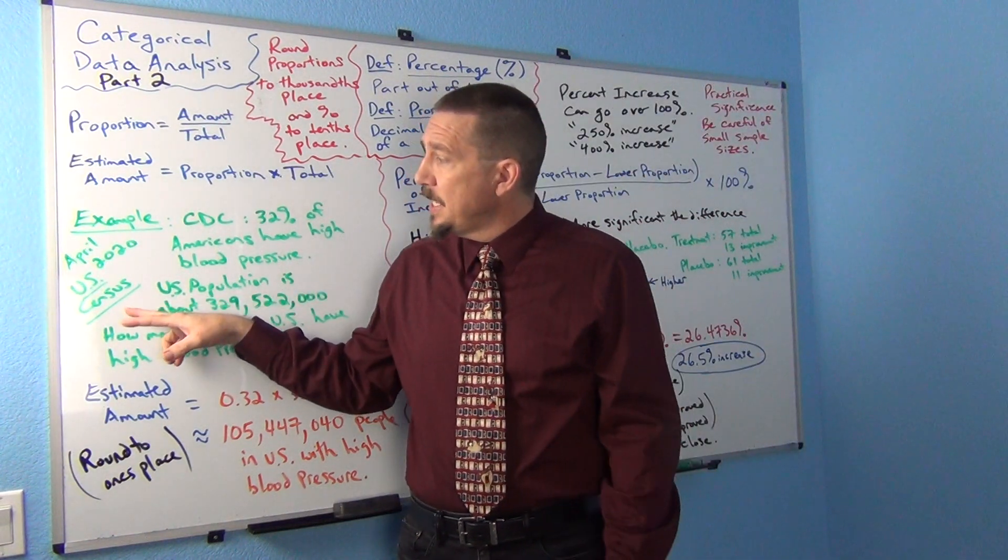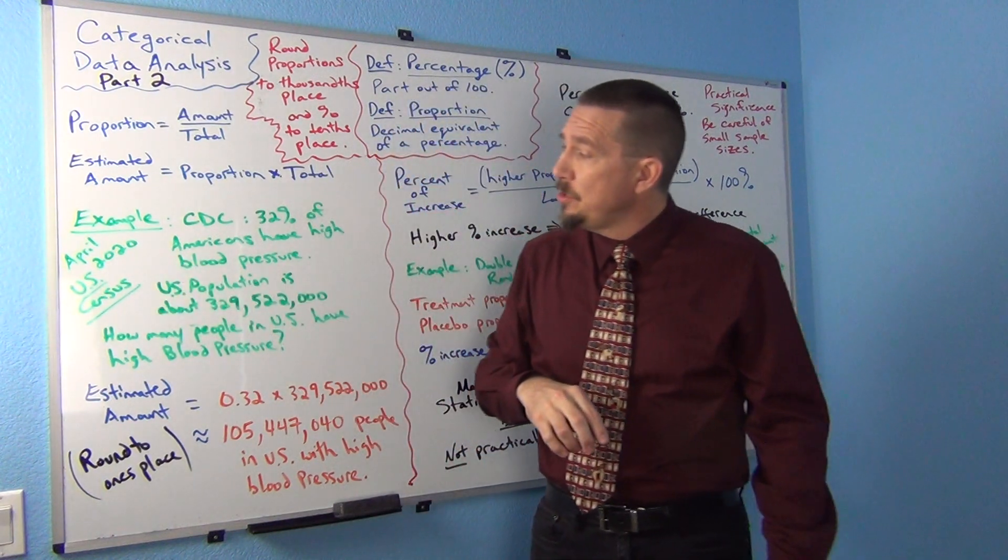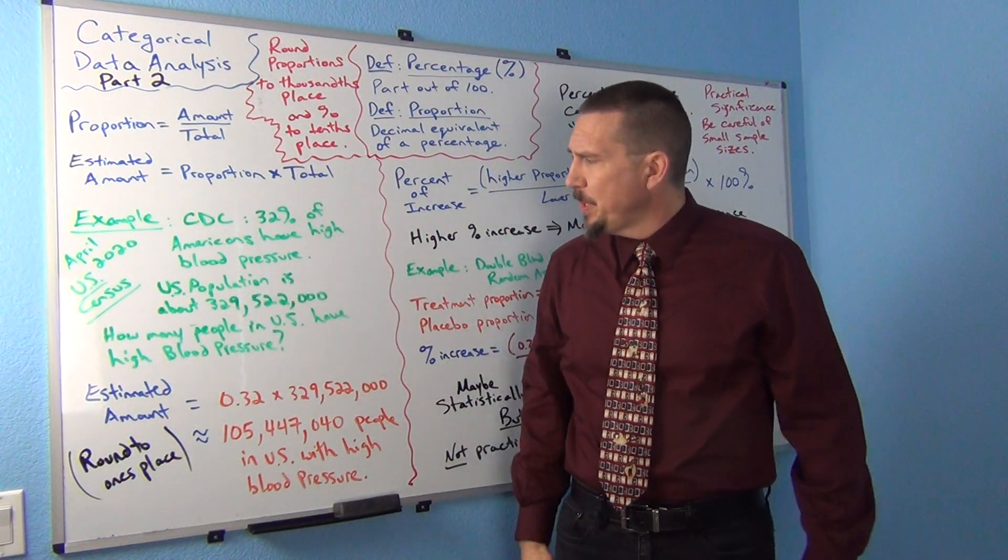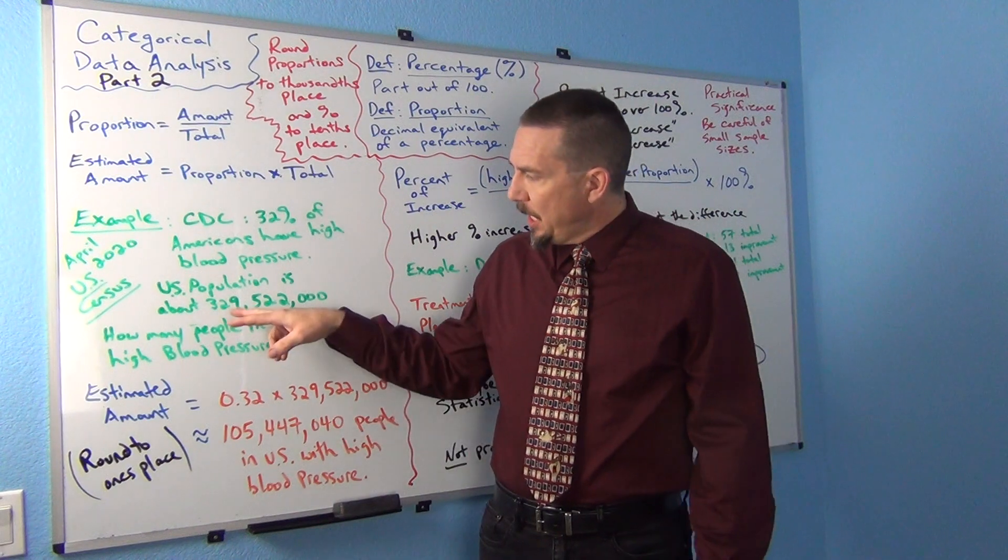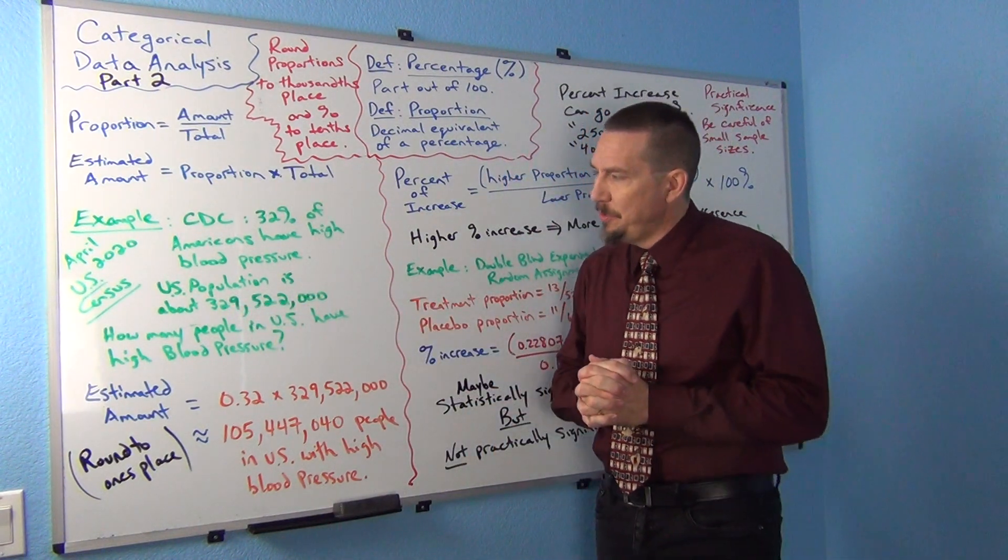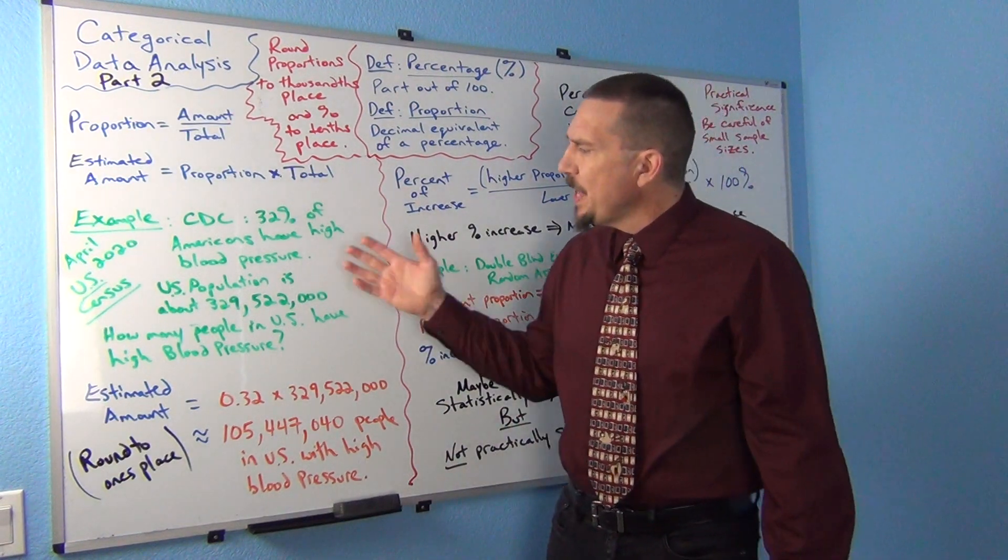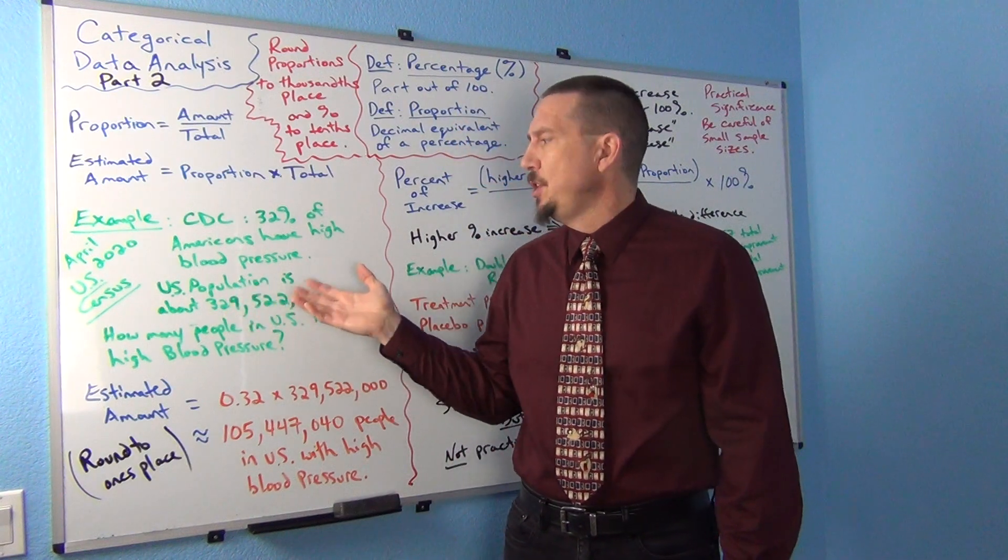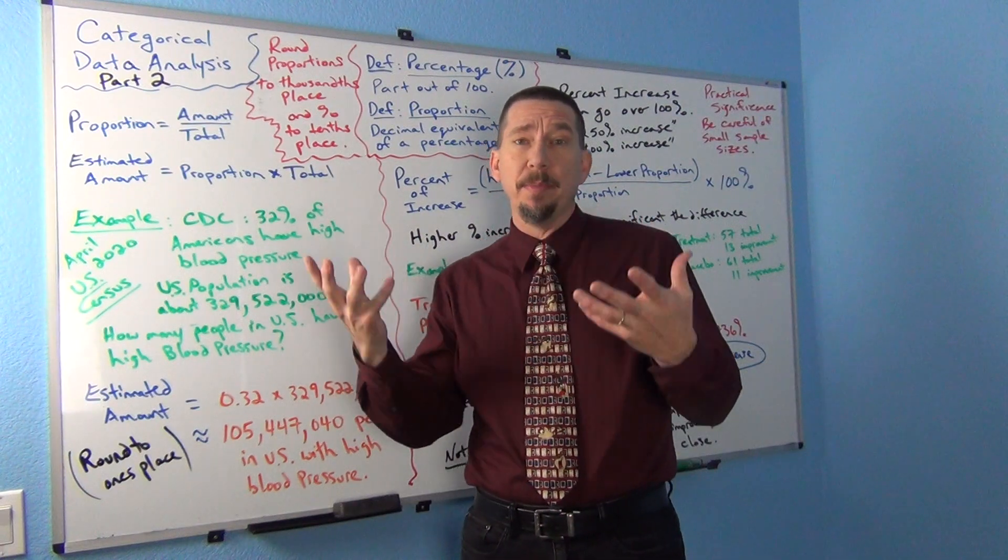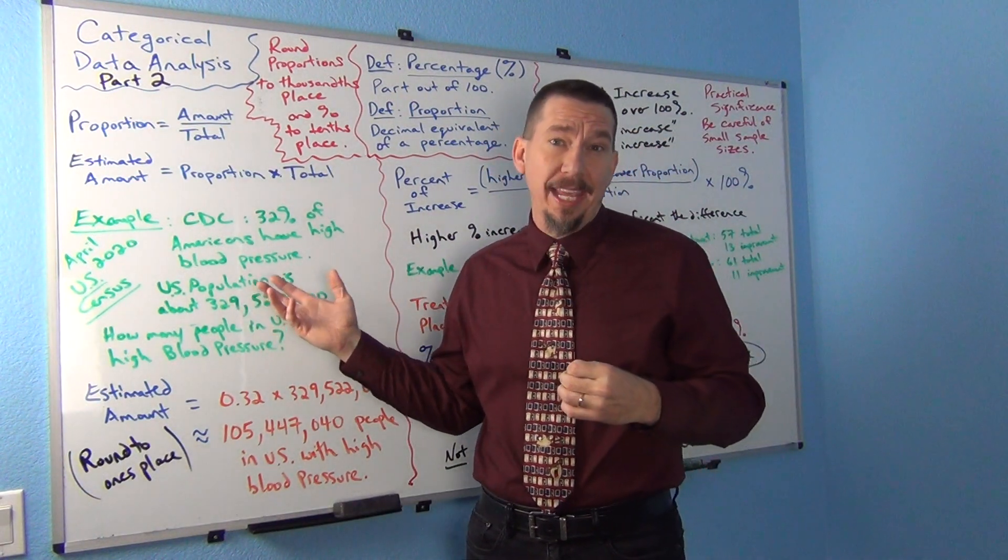Well, if we look at the U.S. Census, I went to the U.S. Census website, as of April 2020, the U.S. population was about 329.5 million. I put a little bit more accuracy, it was about 329,522,000 at that time. But remember it's constantly changing. So if that's my total population of the U.S., how many people in the U.S. actually have high blood pressure? In other words, that would be my question. Well, how many of these 329 million actually have high blood pressure?